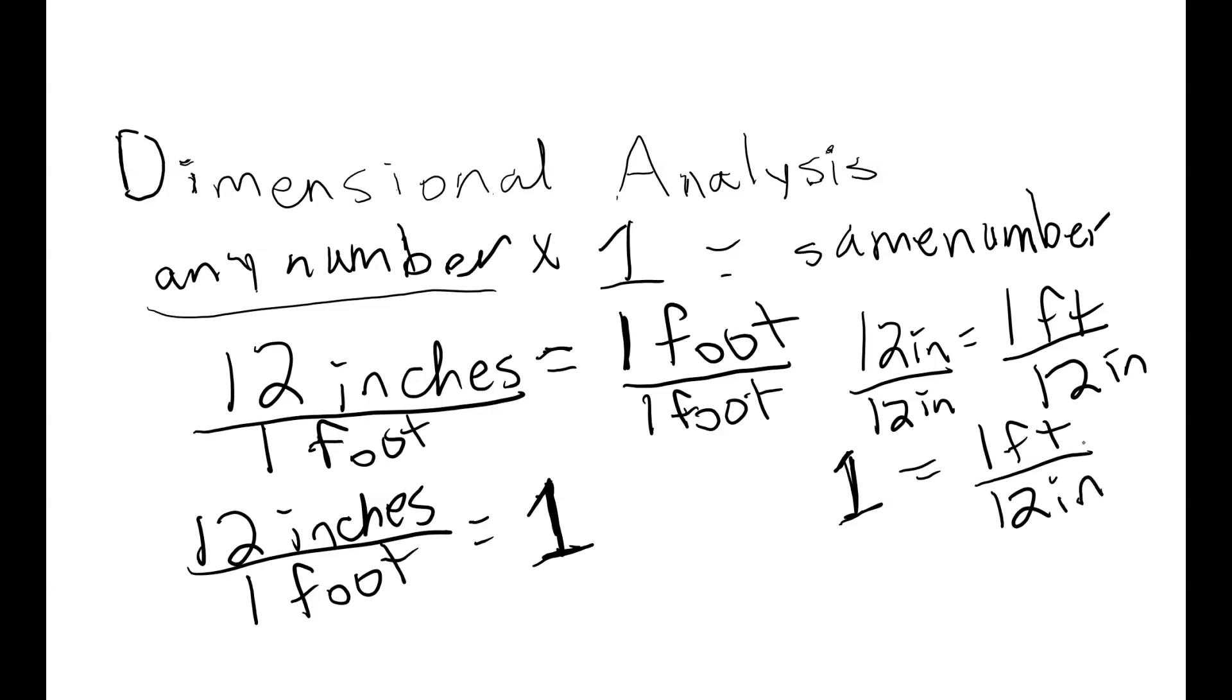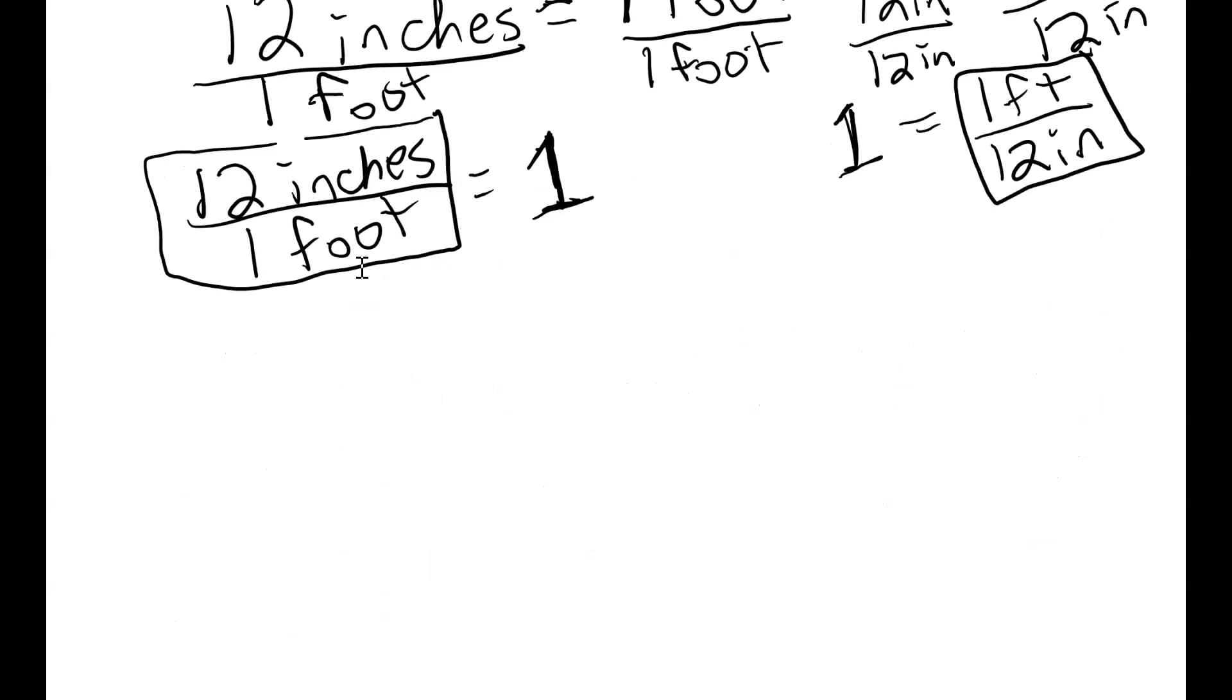This actually gives us what we call two different conversion factors. This is our one conversion factor and this is another. Any equivalency can give us two different conversion factors. Conversion factors allow us to convert between two different units that are measuring the same dimension. In this case, we have 12 inches equals one foot and one foot equals 12 inches.